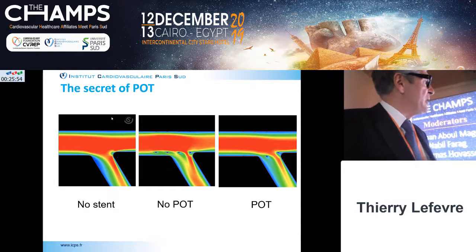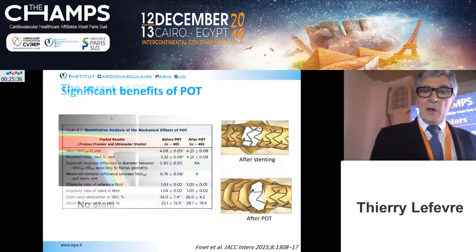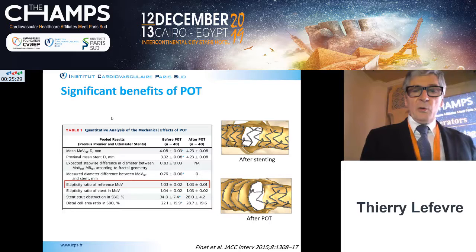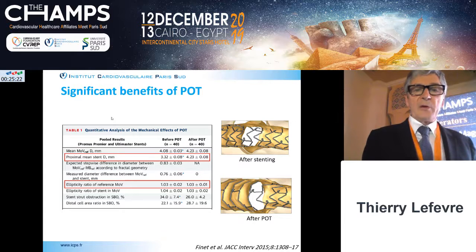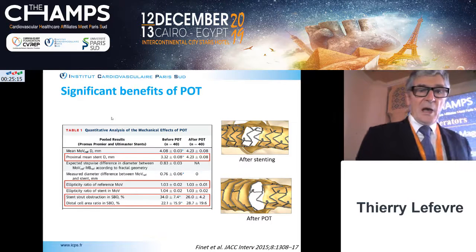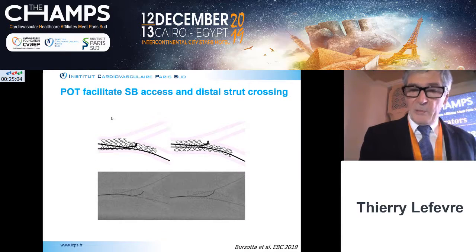In terms of rheology: with no stent, you have optimal rheology; with a stent and no POT, you see poor rheology; with a stent and POT, there is some protrusion of the stent into the side branch with better rheology, nearly comparable to no stent. Data from Gérard Finet show that POT does not significantly change ellipticity, but increases proximal vessel size from 3.3 to 4.2 mm, and decreases stent obstruction from 34% to 26%, clearly improving hemodynamics.